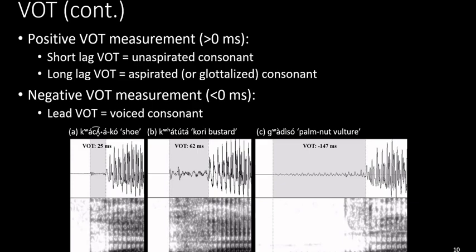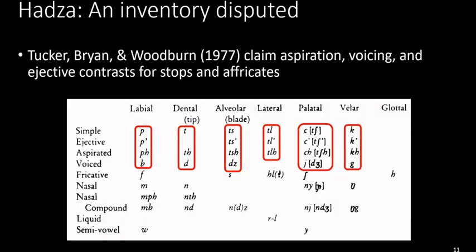Now, with that background understanding of laryngeal contrasts and how VOT is used to describe them, we want to discuss what has been said about the Hadza inventory, which is definitely disputed in the literature. Tucker, Bryan, and Woodburn 1977 claim there is an aspiration, voicing, and ejective contrast for stops and affricates. In their consonant chart, for the labial and velar stops you have a voiceless unaspirated, an ejective, an aspirated, and a voiced version; in the dental you have a simple, aspirated, and voiced but no ejective; and in the affricates, simple, ejective, aspirated, and voiced, except for the lateral which has no voiced counterpart.